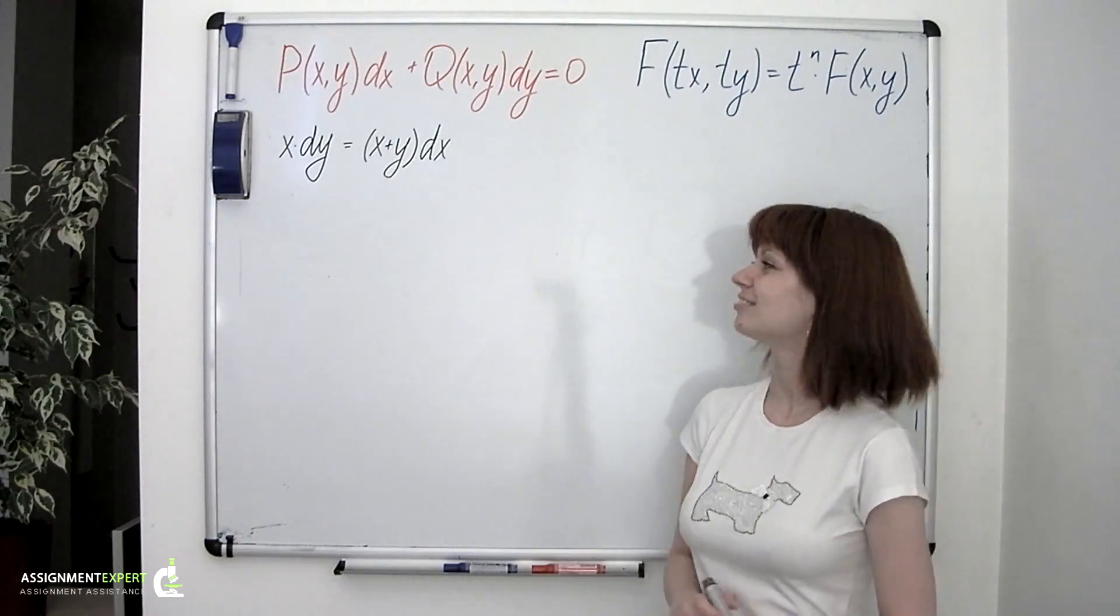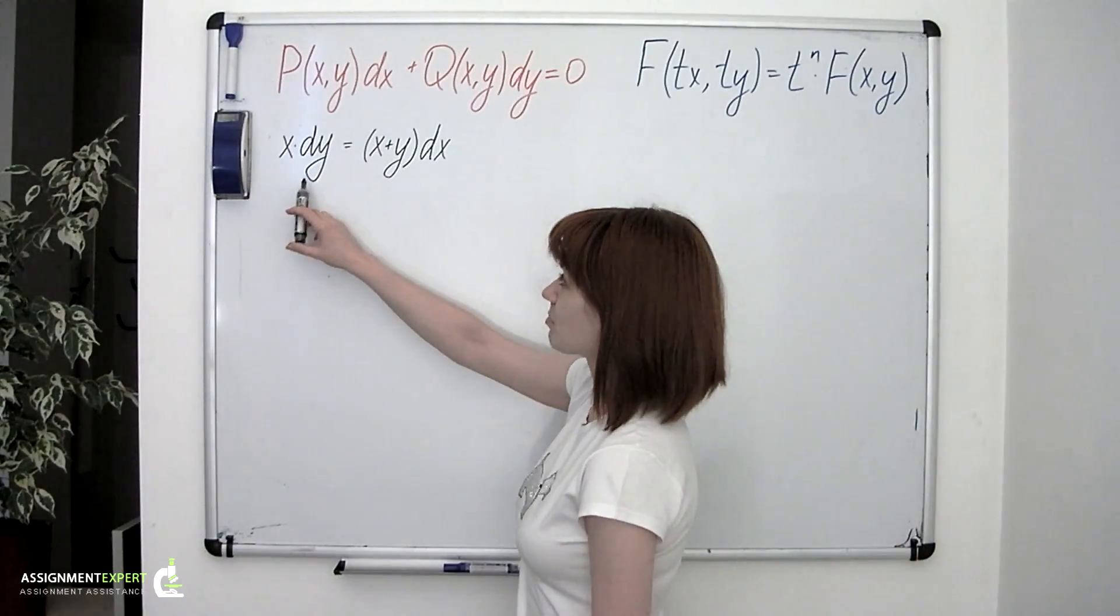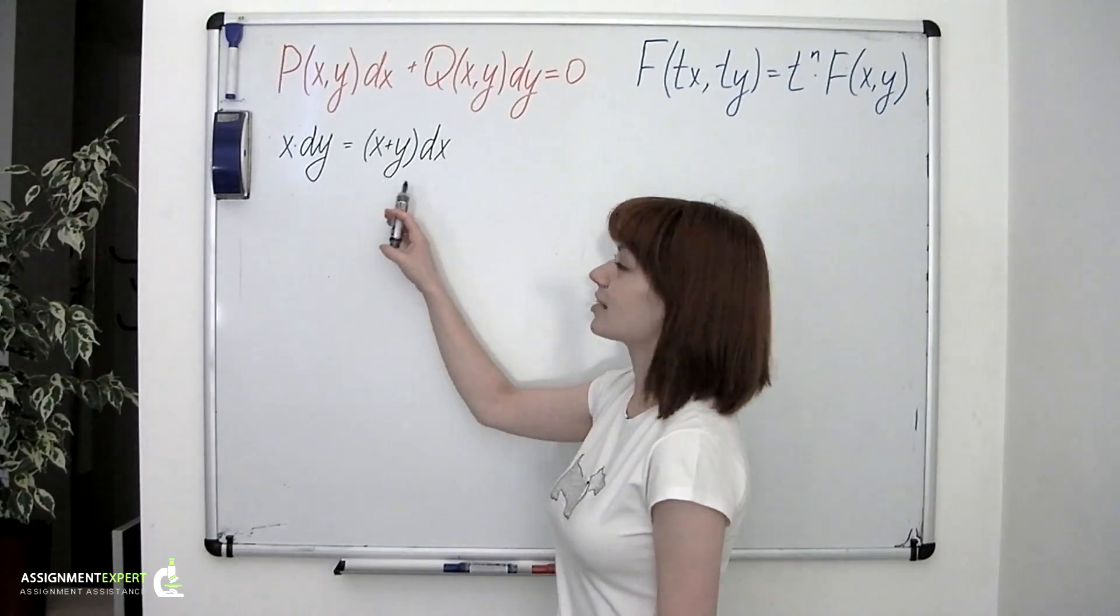Example 1: x times dy equals x plus y times dx.